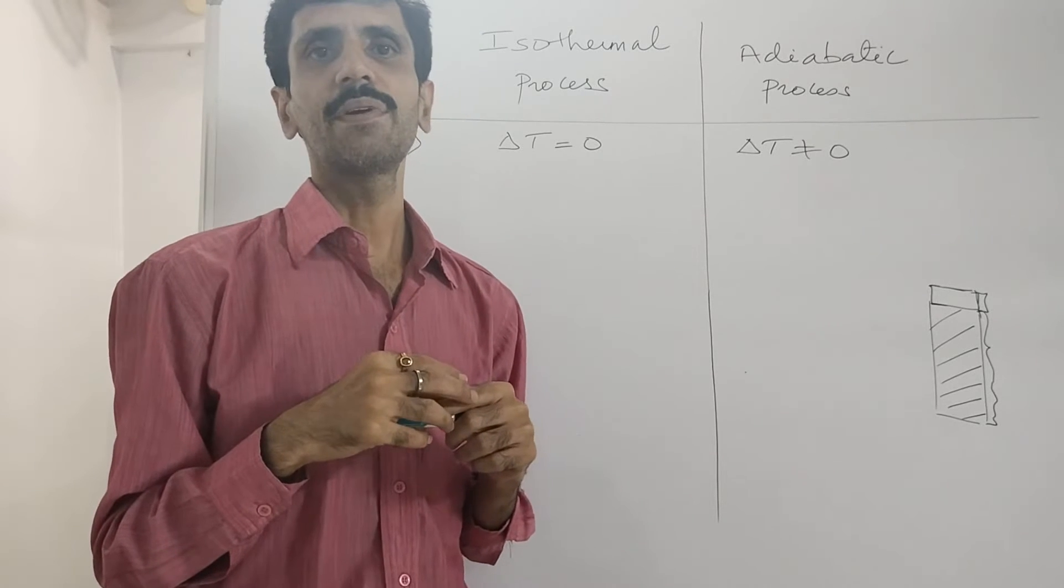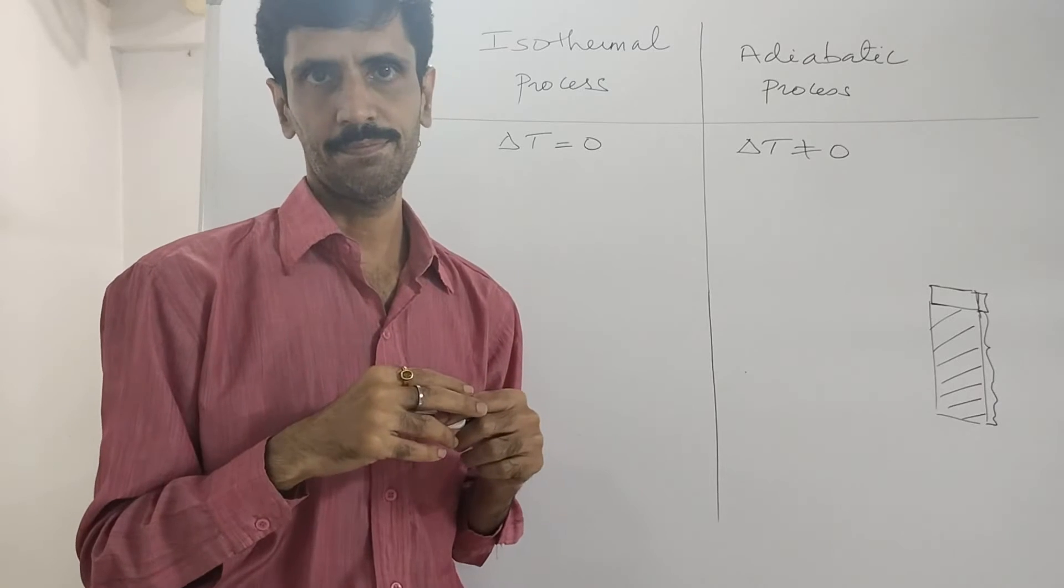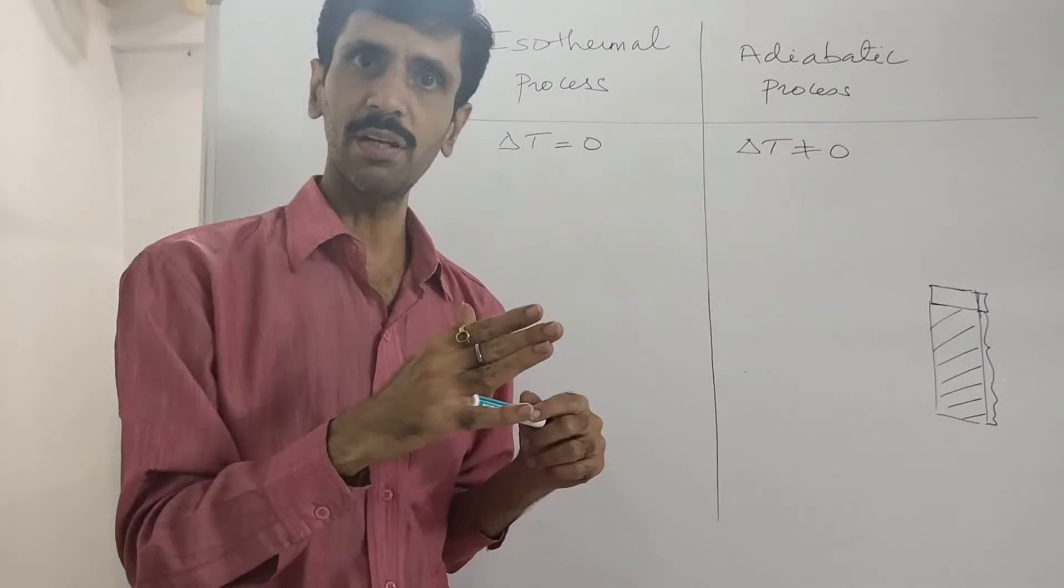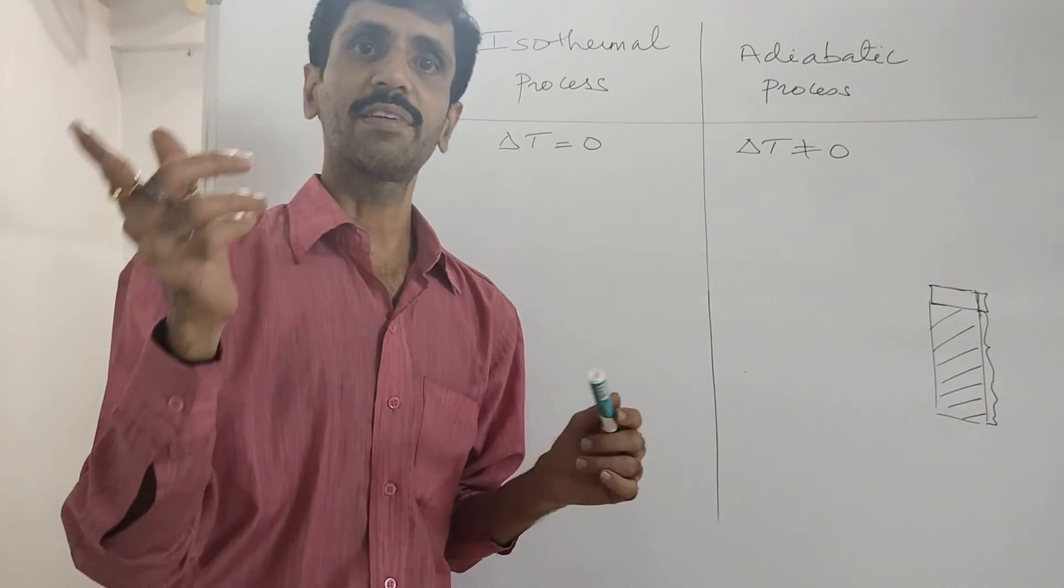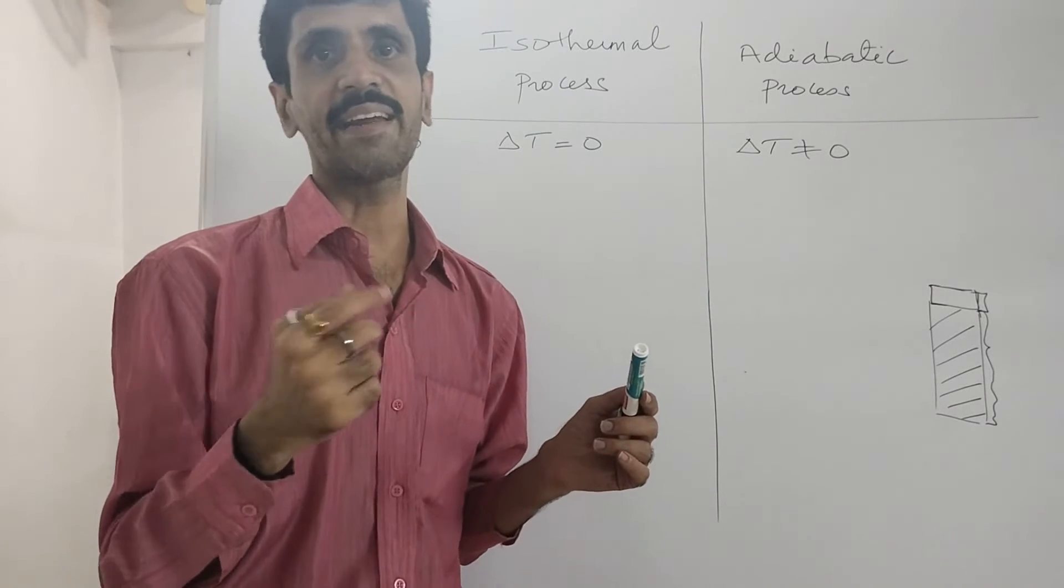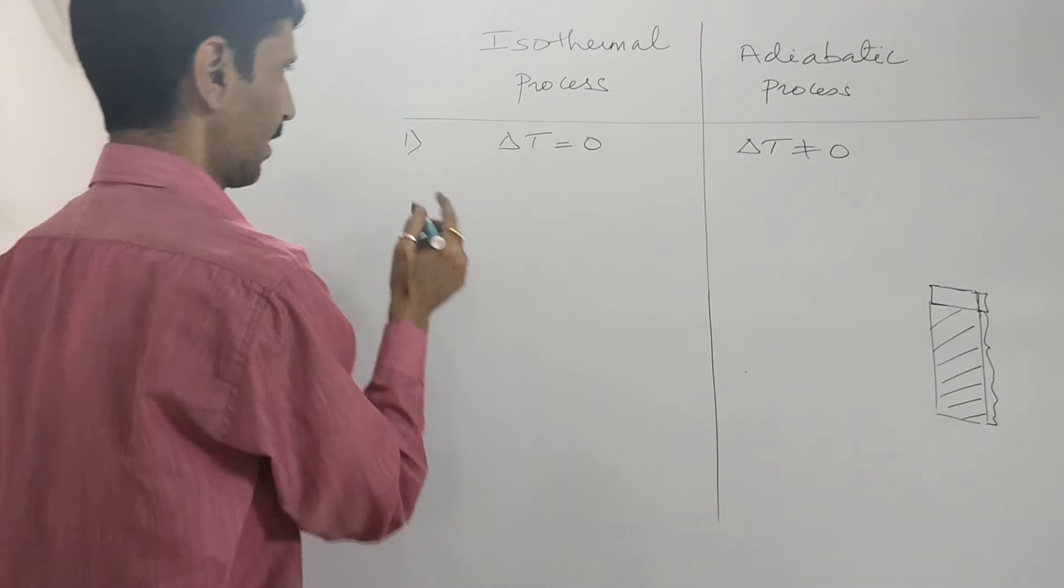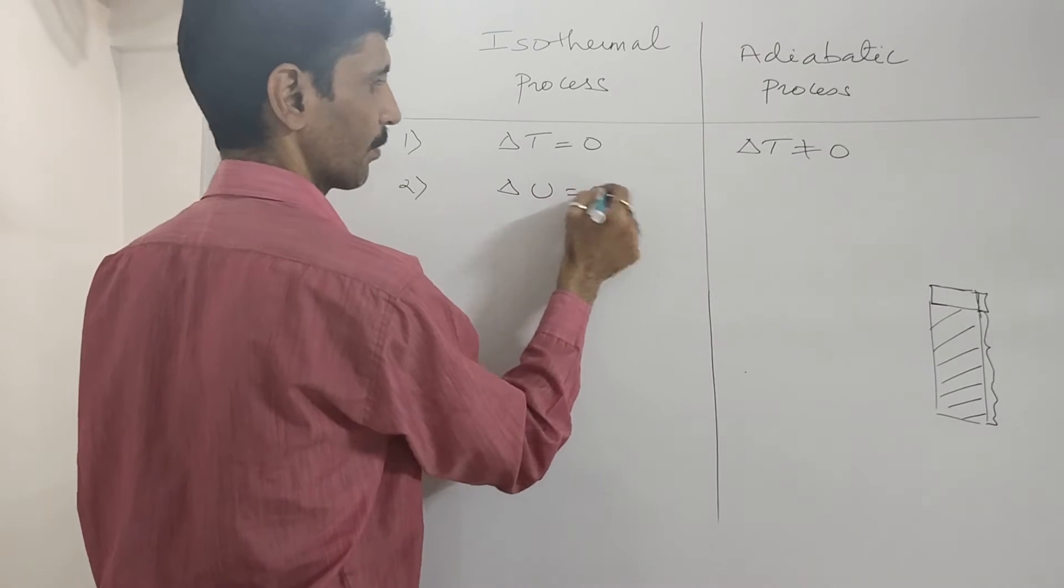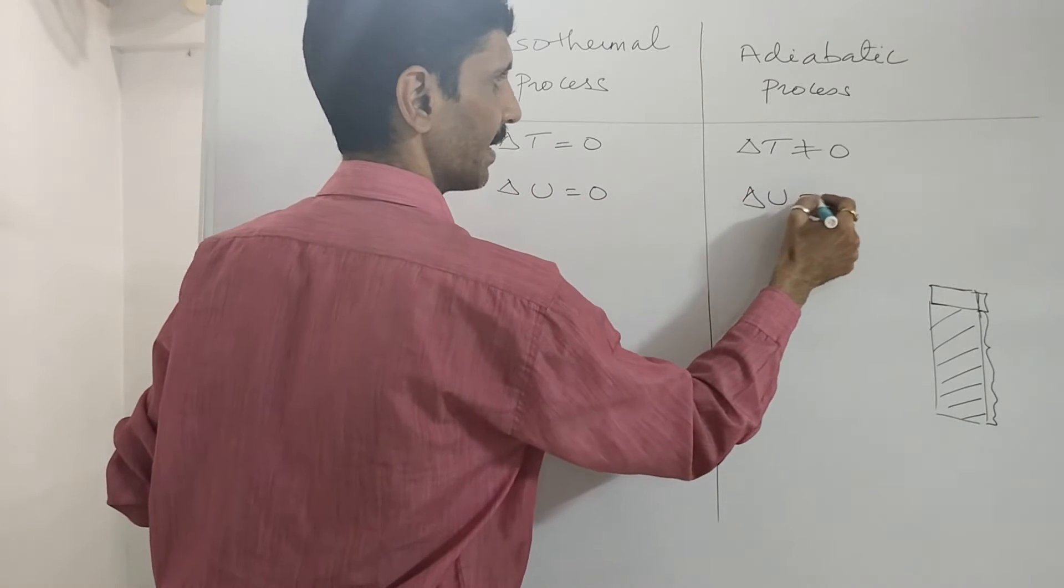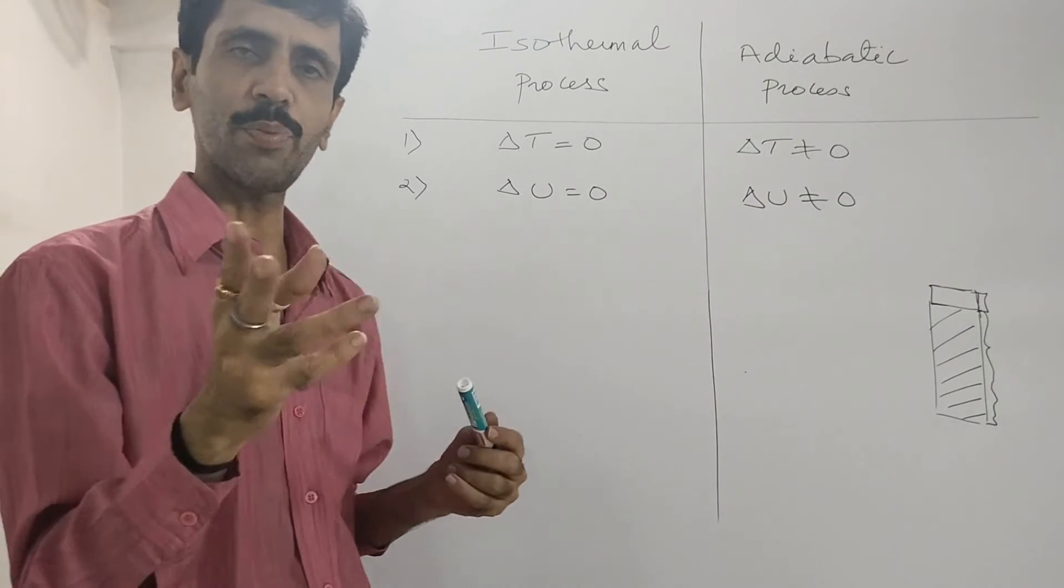Next thing is I told you internal energy is a function of temperature. And if the temperature is constant the internal energy will be constant. If the temperature varies the internal energy varies. Internal energy is denoted as capital U. So this is the second point. Delta U is equal to zero here, we have delta U is not equal to zero. This is point number two.